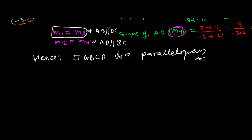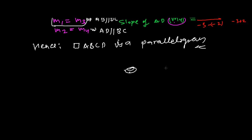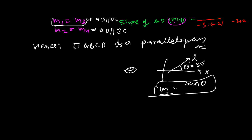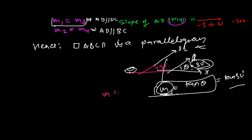To recap: if a line L makes an angle of, say, 30 degrees with the positive x-axis, then tan(30°) is called the slope of that line. If another line L2 also makes the same 30-degree angle, its slope is also tan(30°). Since both lines make the same angle and have the same slope, they are parallel. That's why equal slopes tell us the lines are parallel.